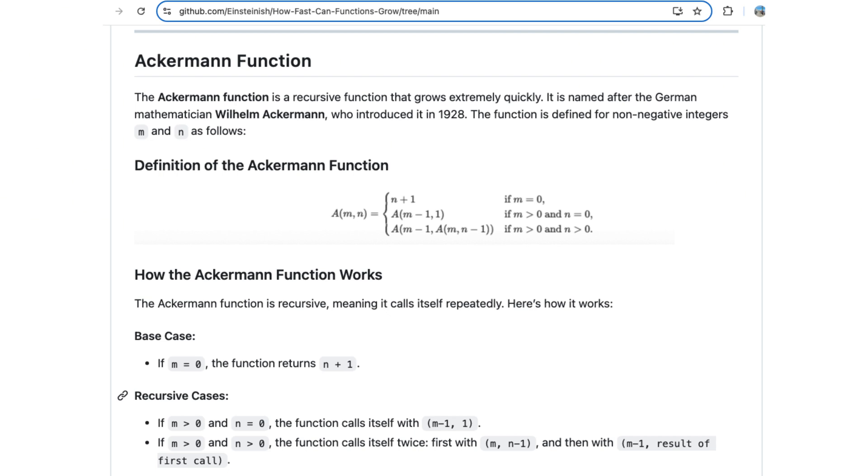Here is how it works. If m equals 0, the function returns n plus 1. For the recursive cases: If m greater than 0 and n equals 0, the function calls itself with m minus 1 and 1. If m is greater than 0 and n is greater than 0, the function calls itself twice. First with m and n minus 1, and then with m minus 1 and the result of first call.